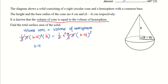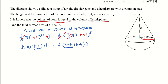I can split (h minus 4) cubed into (h minus 4) squared times (h minus 4). Then cancel two pairs of (h minus 4) squared from both sides. I'm left with h equals 2 times (h minus 4). Expanding: h equals 2h minus 8. Bringing h over and solving: h equals 8 cm. So the height is 8 and the radius is h minus 4 = 4 cm.